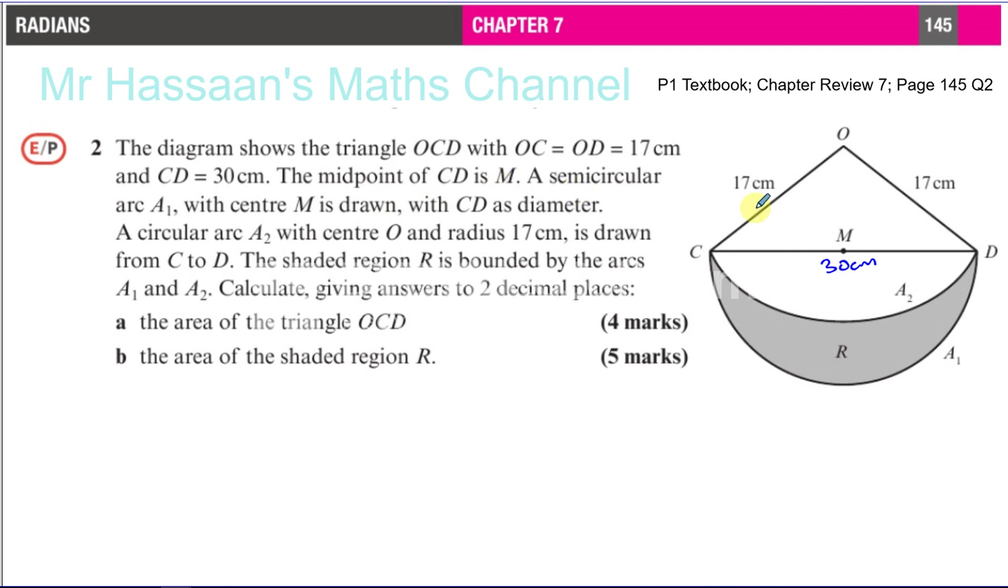The midpoint of CD is M, and a semicircular arc A1 is drawn with center M. So M is basically the center of the circle that this arc A1 forms with CD. So this is like a semicircle. That's the diameter, and that's the semicircle.